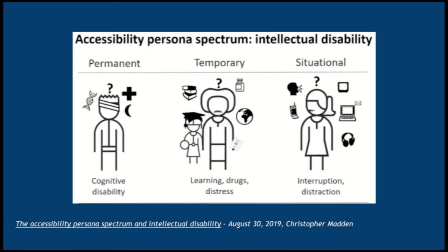Accessibility is often on a spectrum. The spectrum extends from permanent to temporary to situational. Permanent disabilities can include cognitive disabilities such as ADHD or autism, physical disabilities such as being in a wheelchair or having mobile impairments, or disabilities of the senses such as being blind or deaf. Temporary disabilities can include a broken arm or mental distress. Situational factors such as interruptions, distractions, and external noise can also represent disabilities.